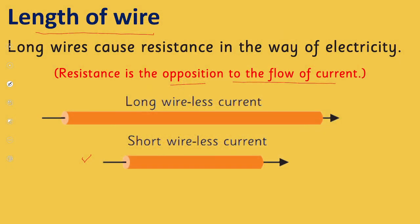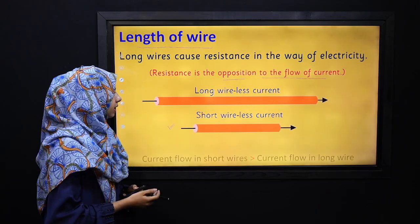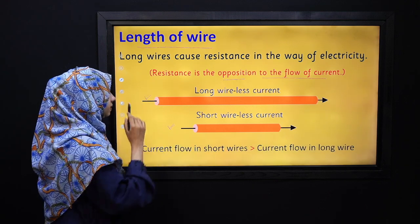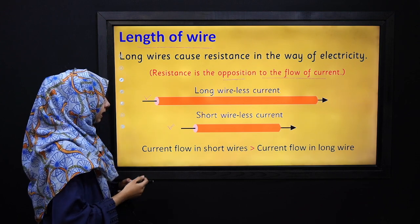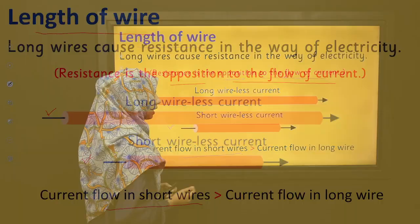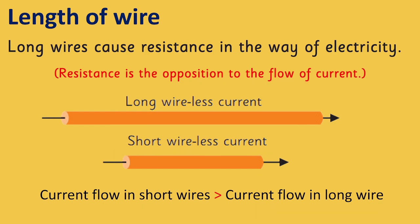If we use a short wire, then the flow of current will be better. But if we use a long wire, then the flow of current will decrease. We can say that the flow of current in short wires is greater as compared to the current flow in long wires, because longer wires have more resistance as compared to shorter ones.